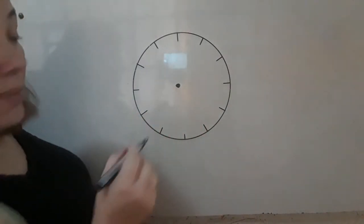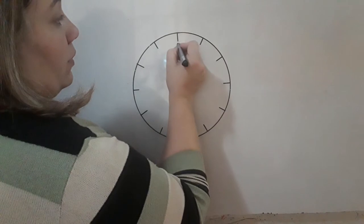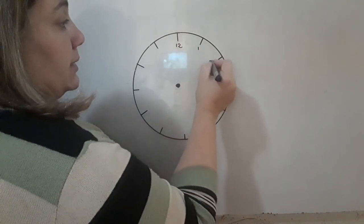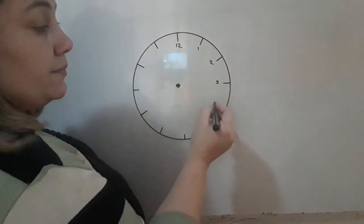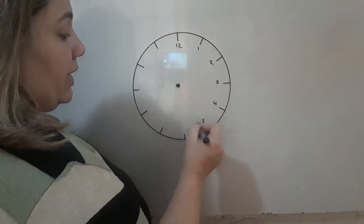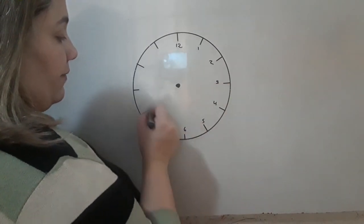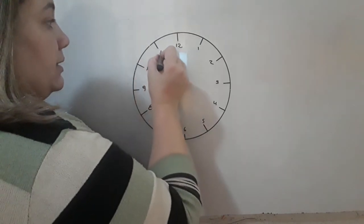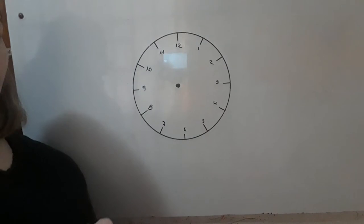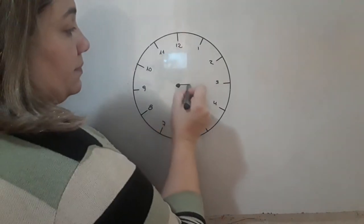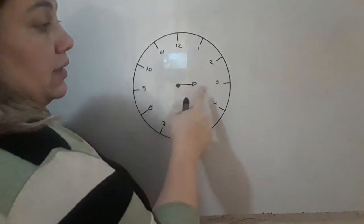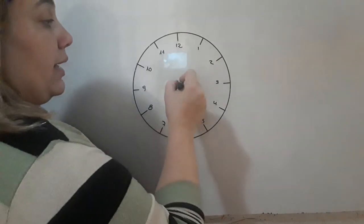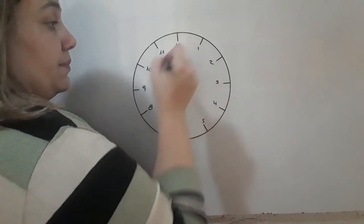So, we got the same time. We got 12 and then 1, 2, 3, 4, 5, 6, 7, 8, 9, 10, 11 and 12. So, it's the same time. This is from the time, the hour, and this is the minute.